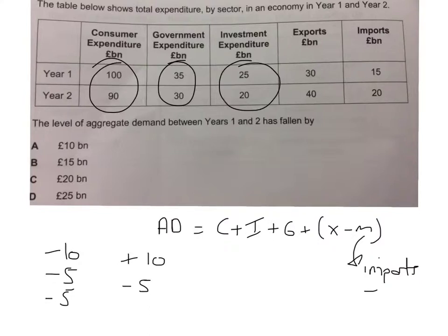Now you've got those numbers, it becomes really easy. Let's do all the minuses at once and then the plus at the end. Minus 10 minus 5 is minus 15, minus another 5 is minus 20, minus another 5 is minus 25, plus 10 is minus 15. So the answer is B.